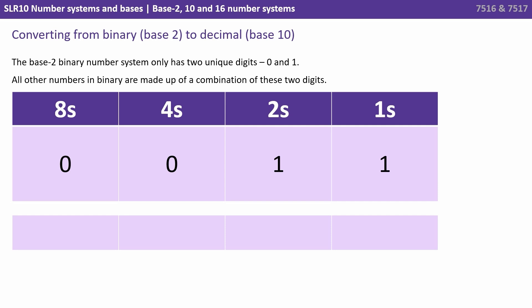This means our right hand column has a weighting of 1 like before but instead of timesing by 10 each time we move to the left we now times our column weightings by 2 because it's a base 2 number system. So the next column has a weighting of 2 and then 4 and then 8 and then so on and so forth.